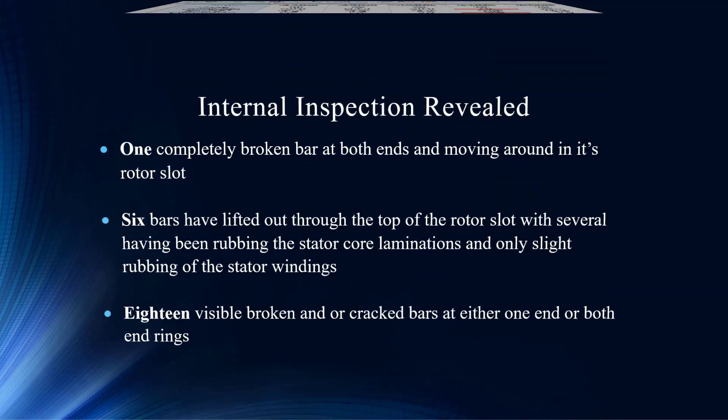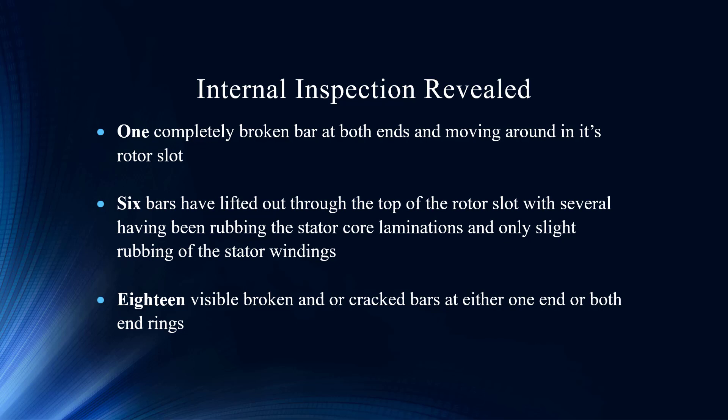They decided to do an internal inspection, and this is what it revealed: one completely broken bar. Now, this was a four-pole motor, but it had 84 bars in it, so you can tell it was a pretty large motor — 4,500 horsepower. One completely broken bar, four-pole, so it may not fly out of the slots. A two-pole would be worse — less centripetal force — so that is going to result in a little less concern.